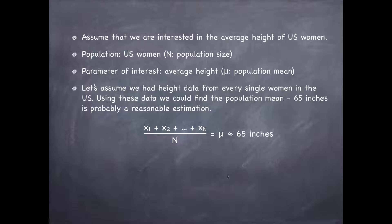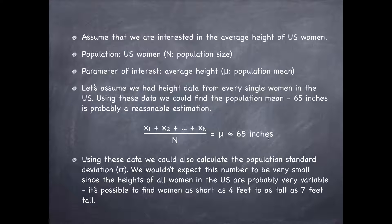Using this data, we could find the population mean, which would probably be about 65 inches. To calculate that, all we would need to do is add up the heights of each one of the women in the population — calling each one X — and divide by our total population size to get our population parameter mu, which we said we might expect to be around 65 inches. Using these data, we could also calculate the population standard deviation. We could plug all of these women's heights into that formula and calculate a measure of the variability of these heights. We wouldn't expect this number to be very small, since the heights of all women in the U.S. are probably very variable — for example, it's possible to find women as short as 4 feet to as tall as 7 feet.